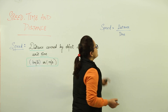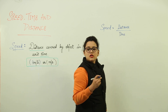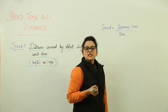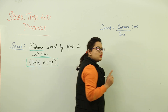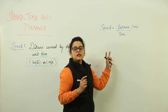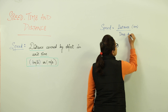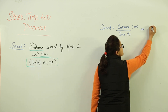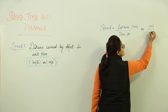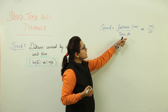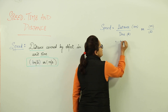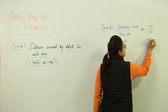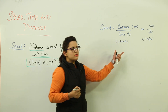Now according to this formula, if distance is given in kilometers — the SI unit of distance would be kilometers — and the SI unit of time is seconds. When writing speed, you use only two units: either kilometer per hour, meaning distance in kilometers and time in hours, or distance in meters and time in seconds. When distance is in kilometers and time is in hours, speed comes out in kilometers per hour. If distance is in meters and time is in seconds, speed is measured in meters per second.